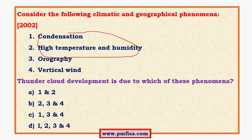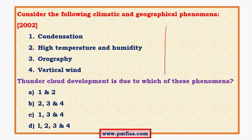All three options are very obvious reasons, so the answer should be D. Checking the fourth option — vertical wind — there are two types. One is upliftment, which is the chief reason behind the formation of thunder clouds. Without vertical winds there is no cloud formation; horizontal winds do not form any clouds, only vertical winds form clouds.